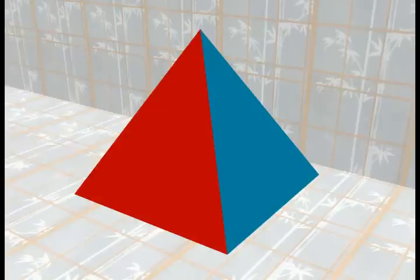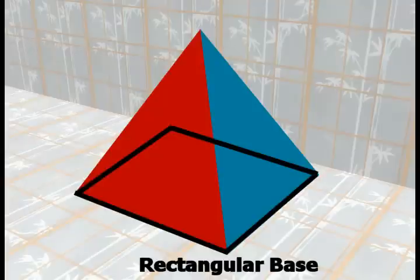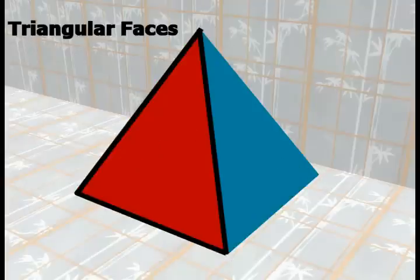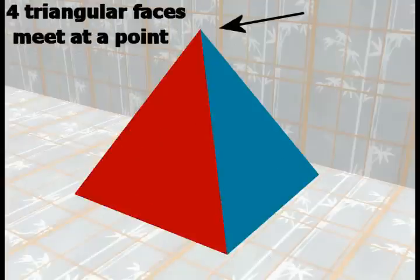Here is a picture of a computer model pyramid. As can be seen in the picture, a pyramid has a rectangular base, four triangular sides that rise up some arbitrary vertical distance, and a point at the top where the four triangular sides meet.